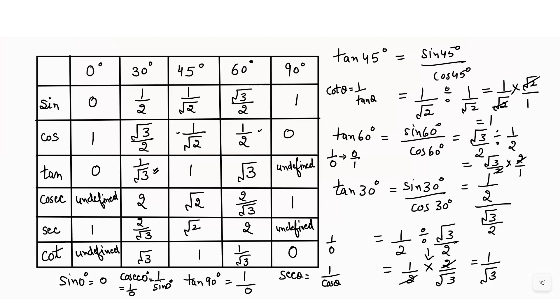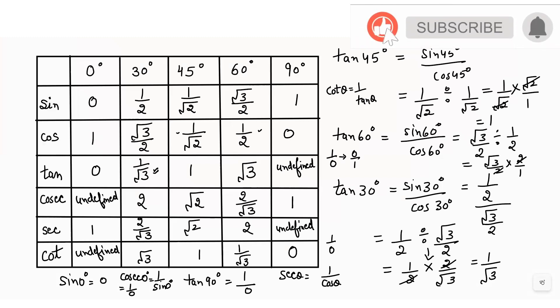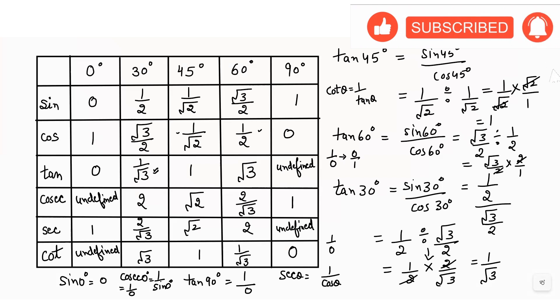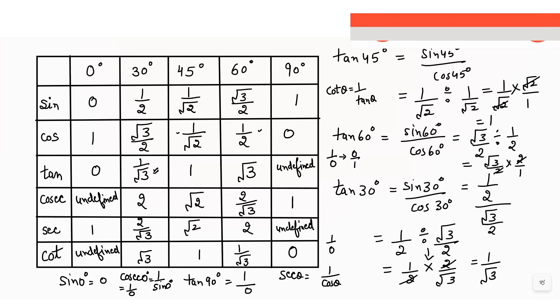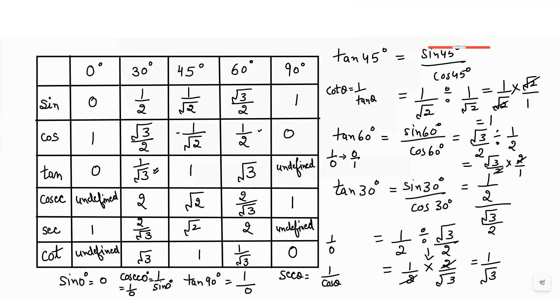So this is how you can make the table for the trigonometric ratios, finding the values for sin, cos, tan, cosecant, secant, and cot at 0°, 30°, 45°, 60°, and 90°. This is a very important table. Whenever you are writing an exam with questions related to this table, quickly draw it so you can solve the values easily. Thank you.